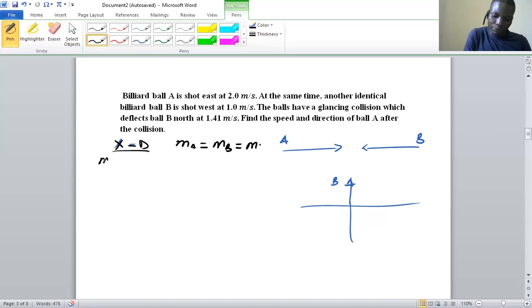We have m·vAx + m·vBx = m·vA'x + m·vB'x. The masses will cancel.